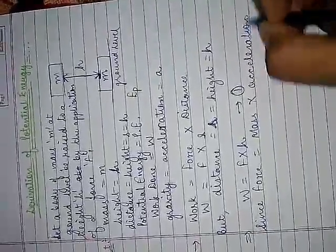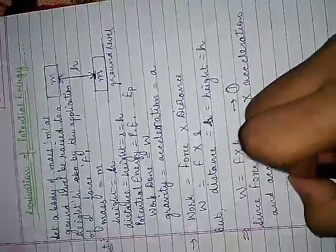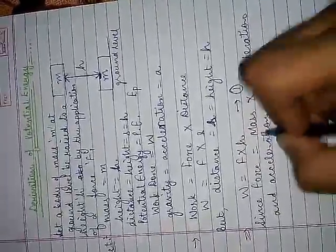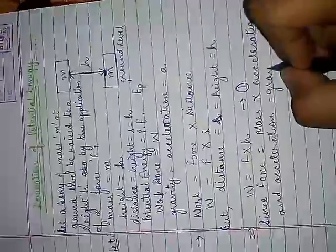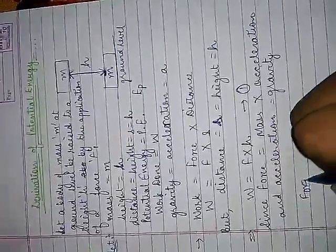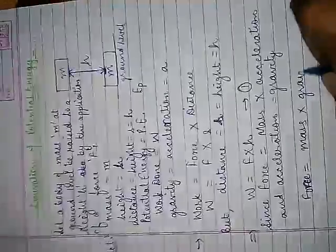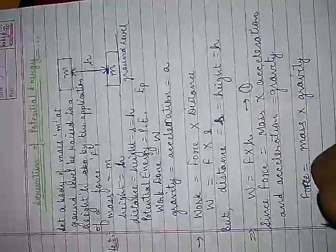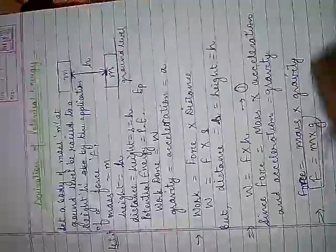Now, since force is equal to mass times acceleration, and acceleration is equal to gravity, we have that force is equal to mass times gravity. Putting the variables, we have that force equals m times g. This being our second equation.